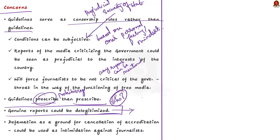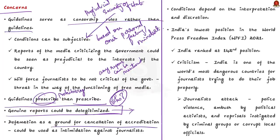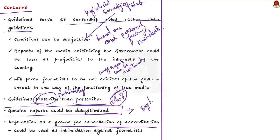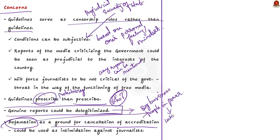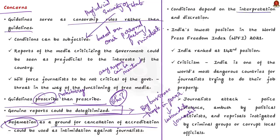The third concern is defamation as a ground for cancellation of accreditation. Generally, journalists are the ones who expose wrongdoing by public officials, politicians, big businessmen, and corporate groups. To stop such information, people in power resort to defamation cases against journalists. Now that defamation is also a provision that can lead to cancellation of accreditation, it provides people in power more opportunity to intimidate journalists. Whether a report is defamatory depends on the interpretation and discretion of the deciding body.